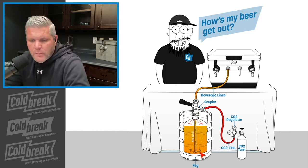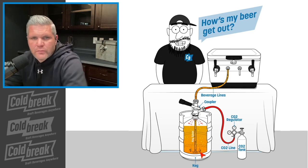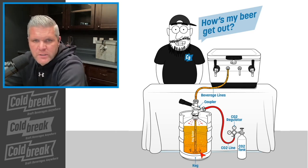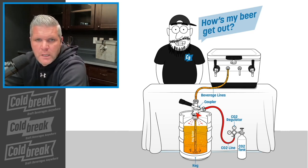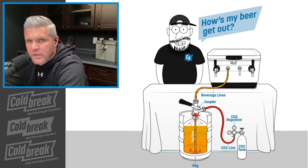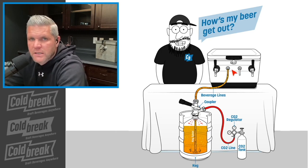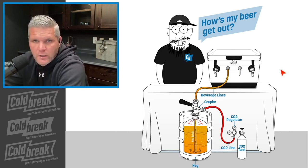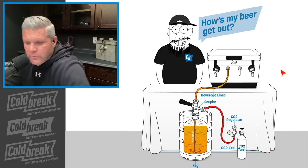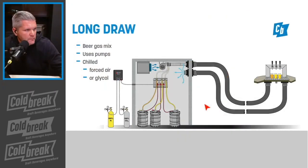The beer then goes up through the middle via the keg spear and out through the beer coupler, and then either into a temporary draft system like a jockey box, or into another type of system such as a long draw draft system.